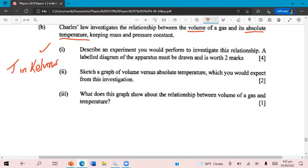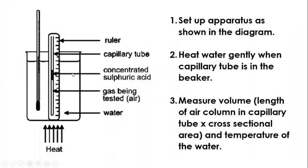Part one says to describe an experiment you would perform to investigate this relationship. A labeled diagram of the apparatus must be drawn and is worth two marks. There are four marks total. Two is for your explanation, but the other two are for your diagram. The diagram that you need to know is this one right here, that you can label this diagram correctly. What we have is a beaker that contains some water. And inside the beaker, we have what's called the capillary tube. That's this part here with this little plug of concentrated sulfuric acid that kind of acts like the oil in the previous diagram to seal it off to trap the air so that we can see when the air expands and contracts.